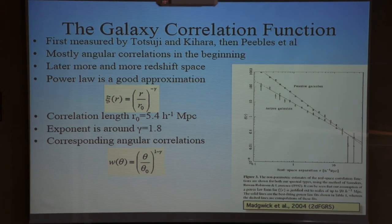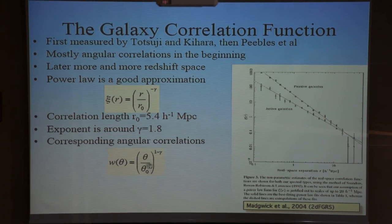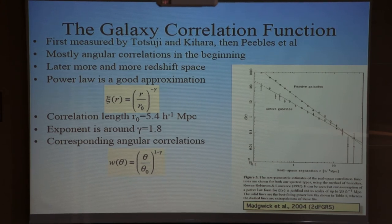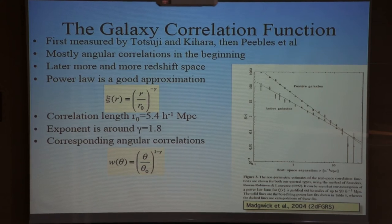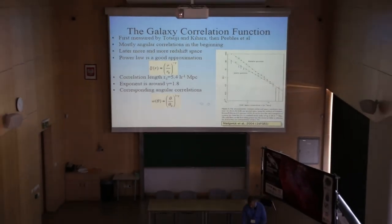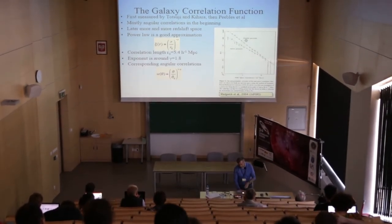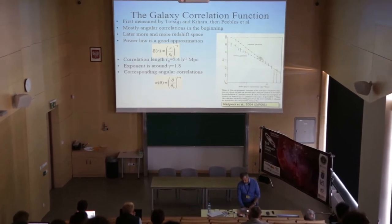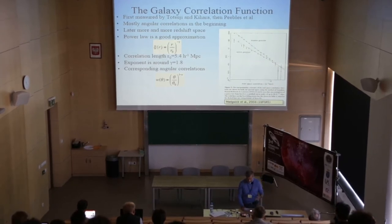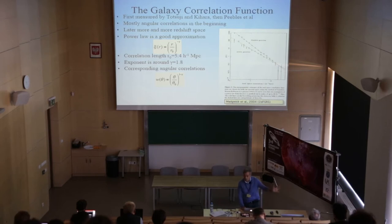You can also do this with angular separations, which was done before the 3D version, also yielding a power law with the angular correlation. This statistical tool can be used to measure different clustering properties of different types of galaxies - for instance, a plot by Madgwick et al. shows star-forming galaxies having a shallower exponent for the correlation function, while quiescent or passive galaxies have a larger exponent and larger amplitude. This can be used in many contexts, and as we will see later, we will use this measurement to understand dark energy through the baryonic acoustic oscillation.